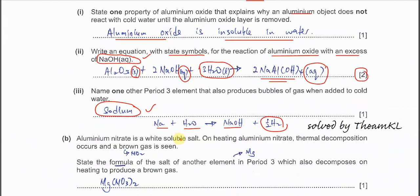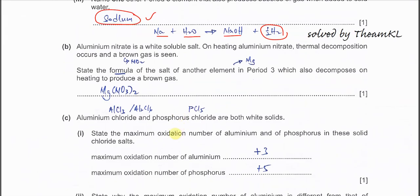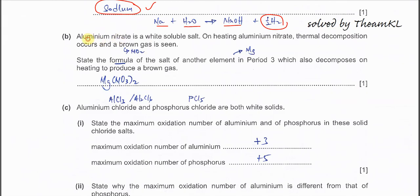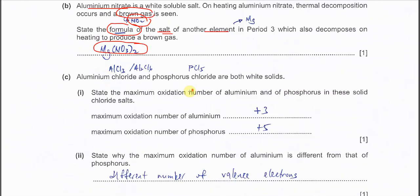Part B. Aluminum nitrate is a white soluble salt. Any nitrate salt is soluble. On heating, aluminum nitrate thermally decomposes and brown gas forms. When nitrate forms brown gas, we know that it must be NO2. State the formula of the salt of another element in Period 3 that also decomposes on heating to produce brown gas. A formula of salt, do not give name. It must be magnesium nitrate, Mg(NO3)2. This is the formula of the salt.